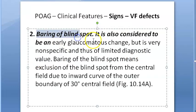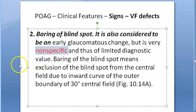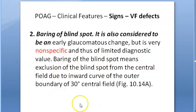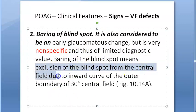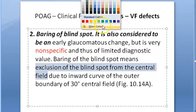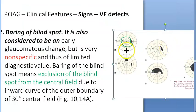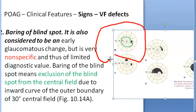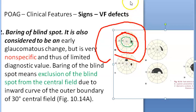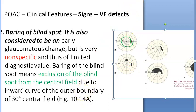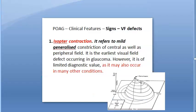Second: baring of the blind spot. This can be considered an early glaucomatous change but is again very non-specific. It involves exclusion of the blind spot from the central field. It occurs due to the inverse curve of the outer boundary of the 30-degree central field, causing the baring of the blind spot.